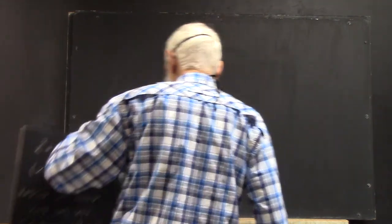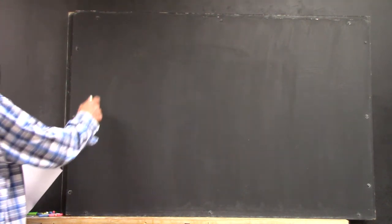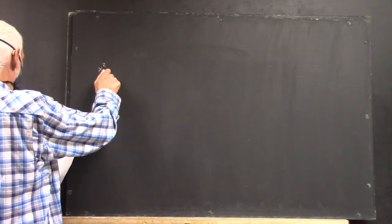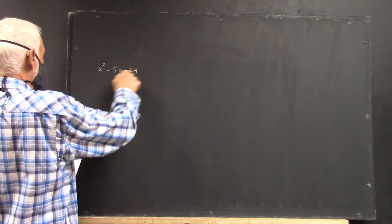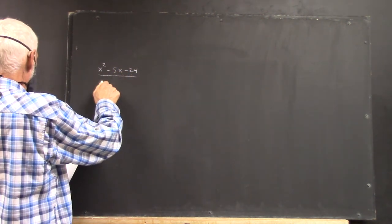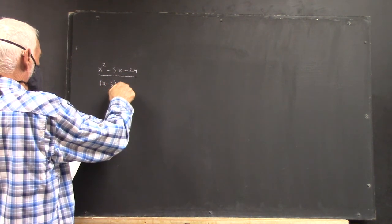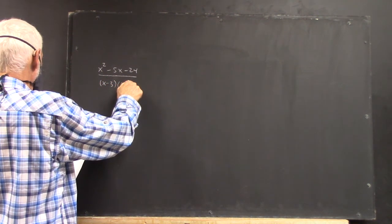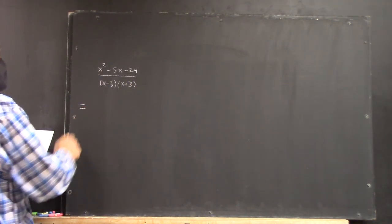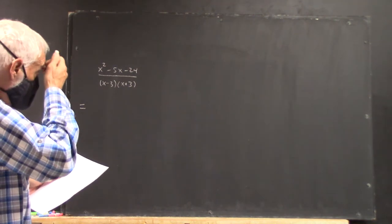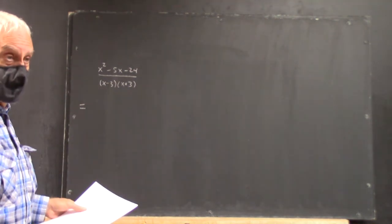Okay. Now we have, what is x squared minus 5x minus 24 over x minus 3 times x plus 3. And we're supposed to factor and simplify. And by factor, that means factor everything that can be factored. Okay.